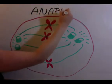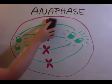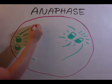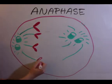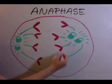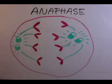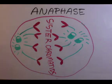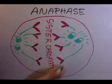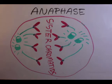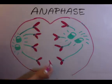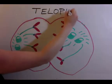Now we have reached anaphase. I like to think of A for 'pulling apart.' The microtubules pull apart the chromosomes, splitting them into sister chromatids. We can see the plasma membrane beginning to cleave, as though it's going to pull into two cells.